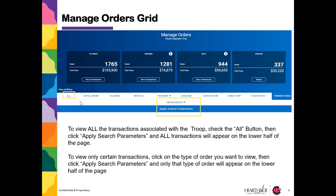To view all the transactions associated with the troop, click the All button and then click Search Parameters. If you wish to only view certain types of transactions — for instance, Cookie Share — click that box and click Apply Search Parameters.